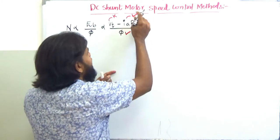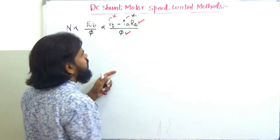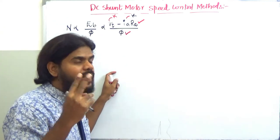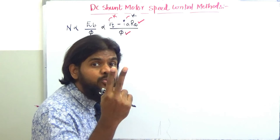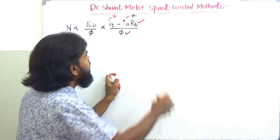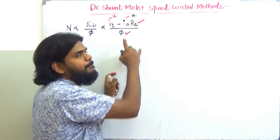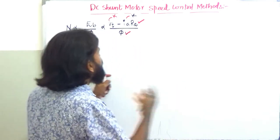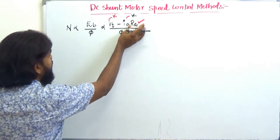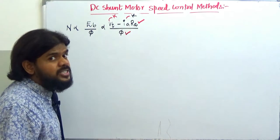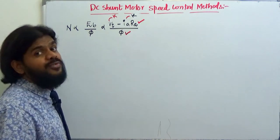With constant load, Ia is unchanged. So I have the scope of controlling speed by only two ways: one is by controlling Ra, and the second is by controlling flux φ. This gives us two distinct speed control methods.